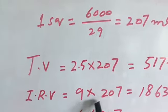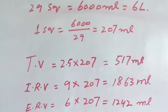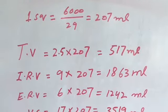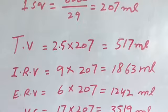For inspiratory reserve volume, we have 9 squares. We multiply 9 by 207 to get the result. You can also identify the inspiratory reserve volume from the vital capacity portion of the spirogram — the number of squares in the inspiratory reserve volume are 9. For expiratory reserve volume, we have 6 squares. Multiplying 6 by 207 gives 1242 ml. This is the expiratory reserve volume, which can also be read from the vital capacity section of the spirogram.